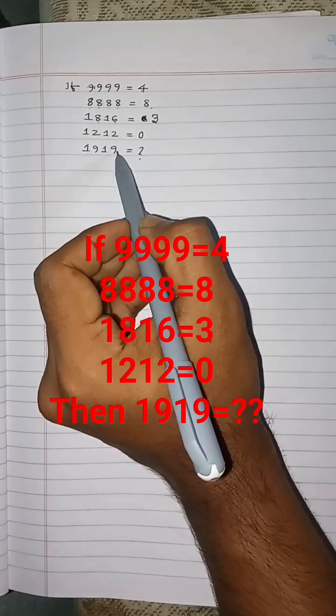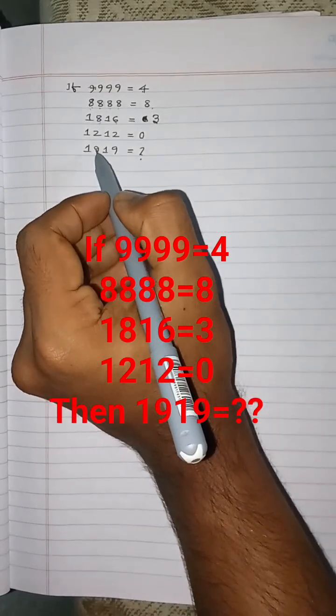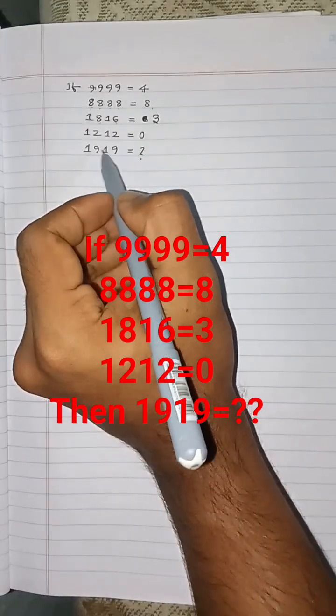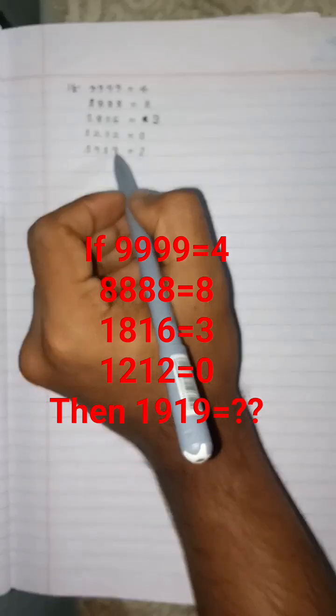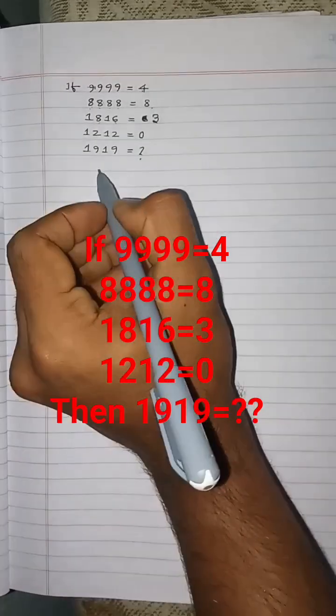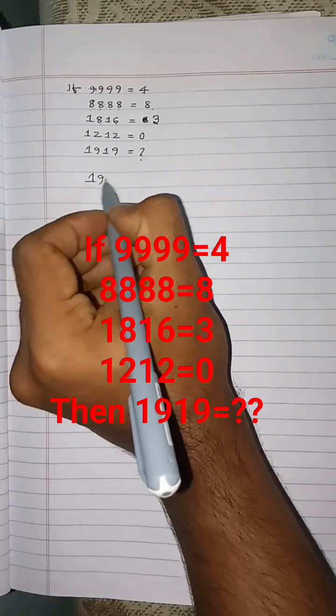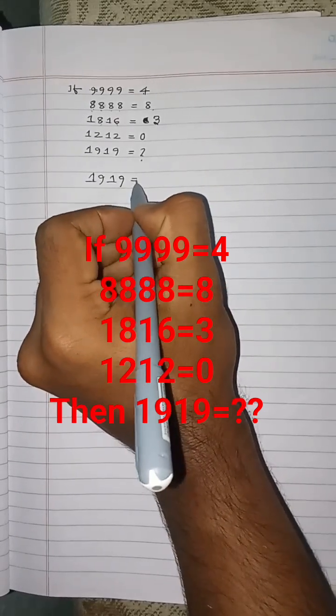In 1, 9, 1, 9, there is one circle in 9, and there is another one circle in 9. So, two circles, 1, 9, 1, 9 equal 2.